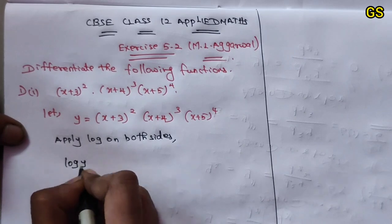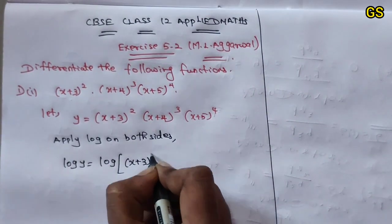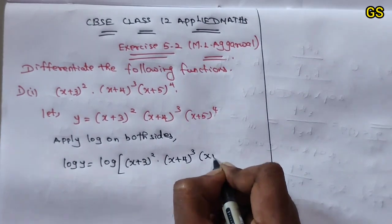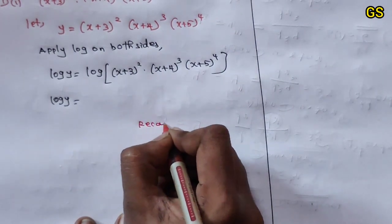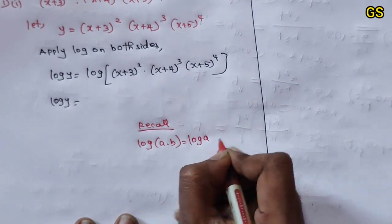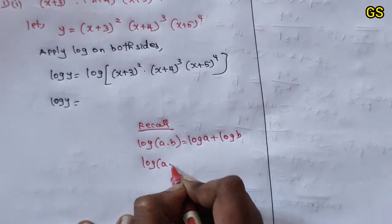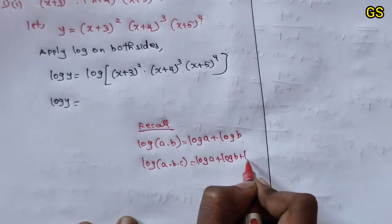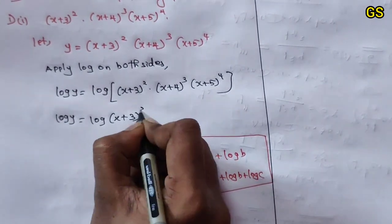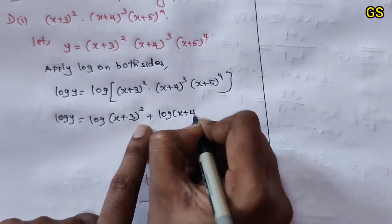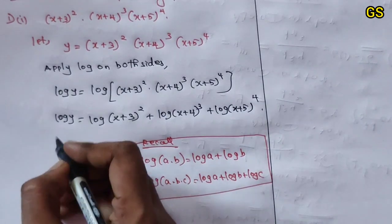Apply log on both sides. Log y is equal to log of the full expression. Recall the property: log of a into b equals log a plus log b. For three terms: log of a·b·c equals log a plus log b plus log c. So log y equals log of (x+3)² plus log of (x+4)³ plus log of (x+5)⁴.